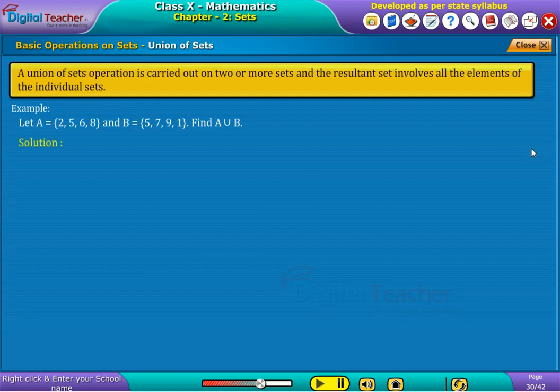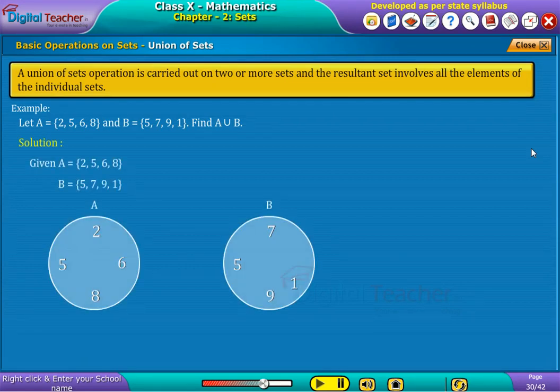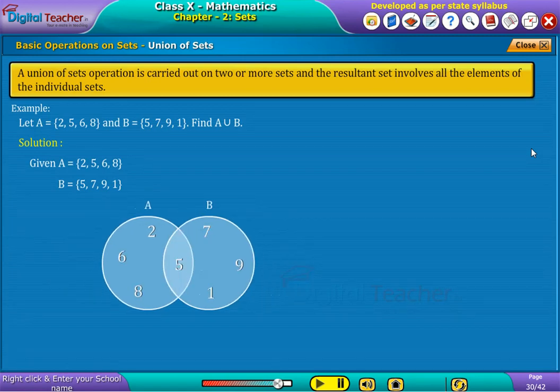Solution. Given A is a set of 2, 5, 6, 8 and B is a set of 5, 7, 9, 1. To find A union B, we need to consider both the elements of A and B and common element should be taken once. Therefore, A union B is written as shown.